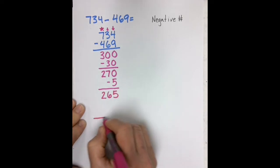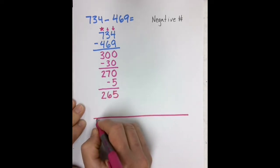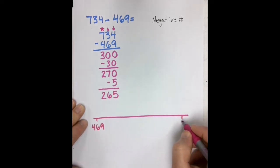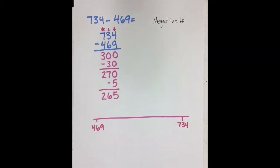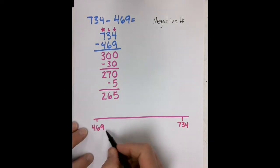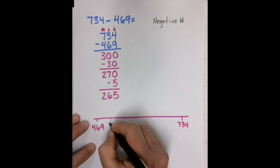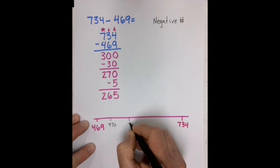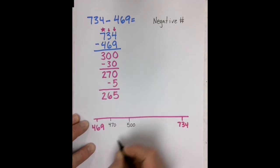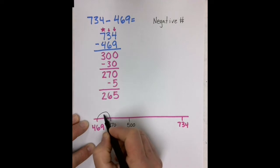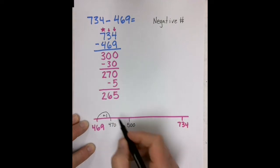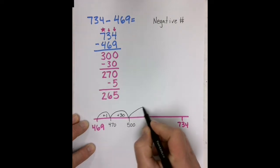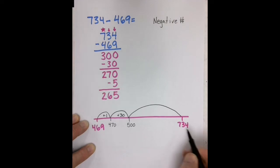I can show that my answer is correct by doing a number line, by skipping forward. If I'm at 469, I would like to get to 470, and then to 500. 469 to 470 is 1. 470 to 500 is 30, and 500 to 734 would be 234.